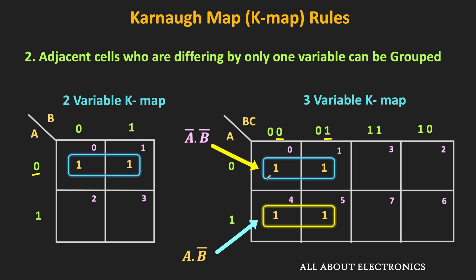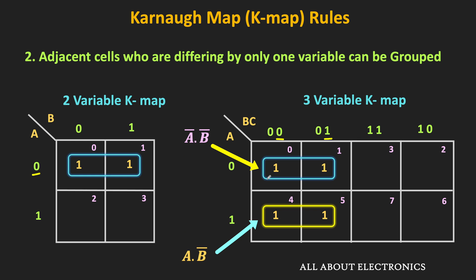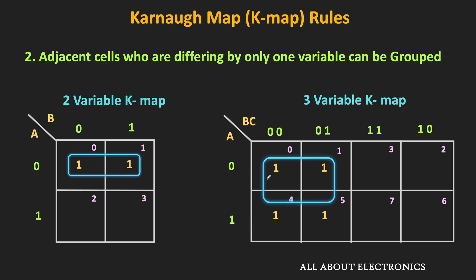Further, if you see these two groups, then between them only one variable is changing — that is variable A. So once again, it is possible to combine these two groups, and in this way it is possible to make an even larger group. That is how the grouping can be done in the K map.